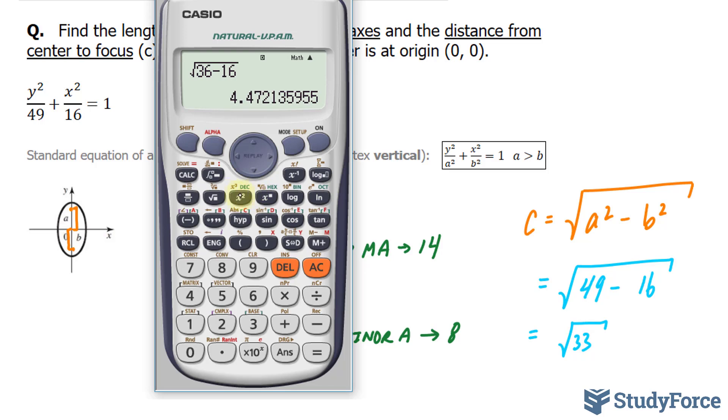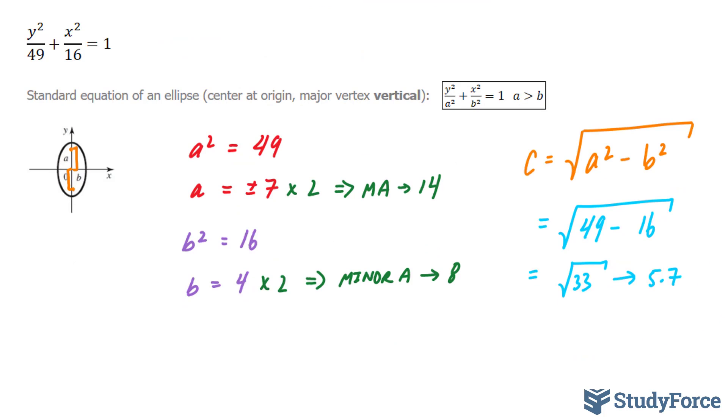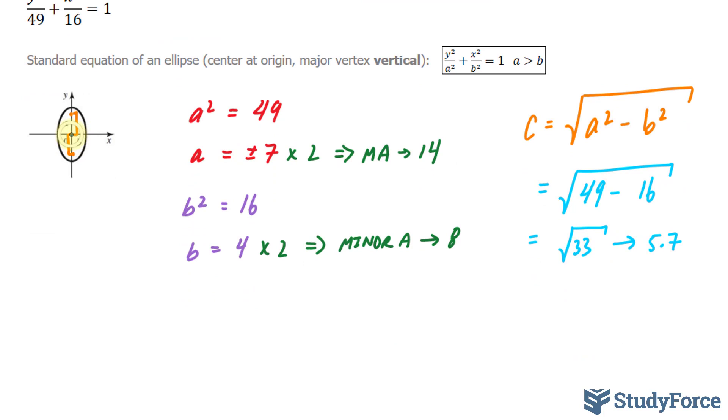Using our calculator, the square root of 33 is equal to roughly 5.7. Therefore, the distance from the origin to the focus is 5.7 plus or minus.